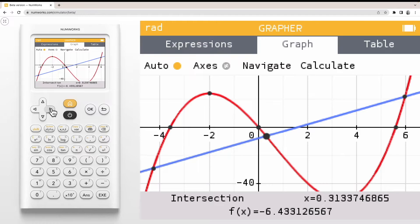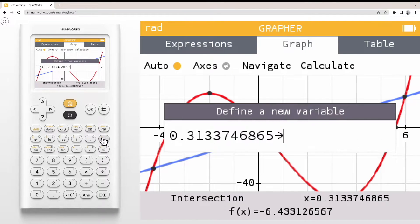First, find the point you're interested in storing. To store the x value of the point, simply press shift and then x to the y key to access your store arrow. Then use your alpha key to create the desired variable. Press ok.